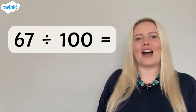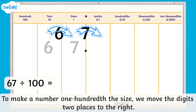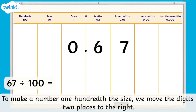Let's take a look at how this works when dividing numbers by 100. To make a number one hundredth the size, we move the digits two places to the right. This is equivalent to dividing by 10 two times. Let's take a look at the calculation 67 divided by 100. The 6 moves two places into the tenths column, and the 7 moves into the hundredths column. We can show that there is no value in the ones column by using zero as a placeholder. So 67 divided by 100 equals 0.67.